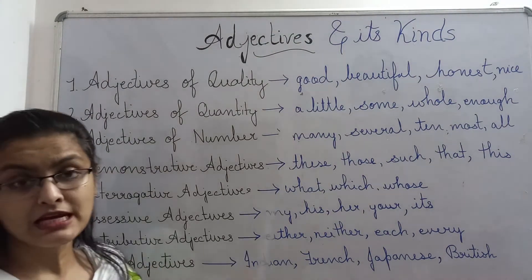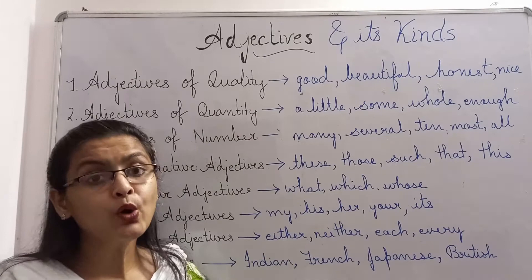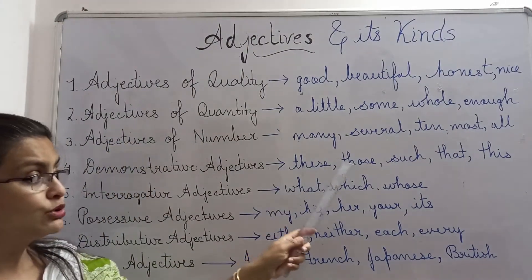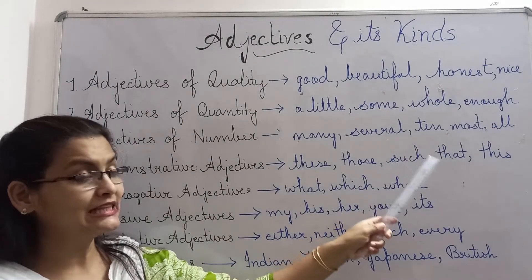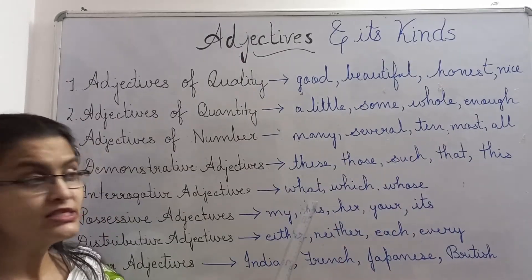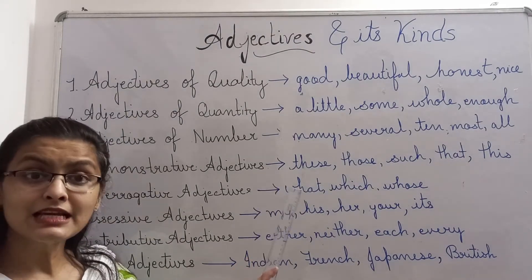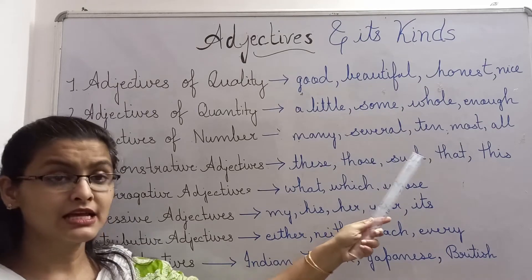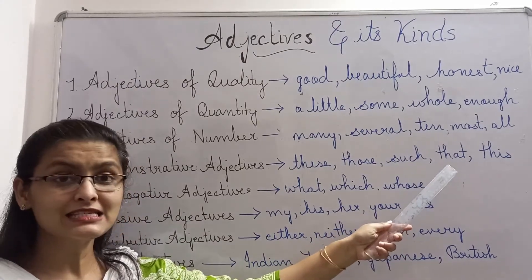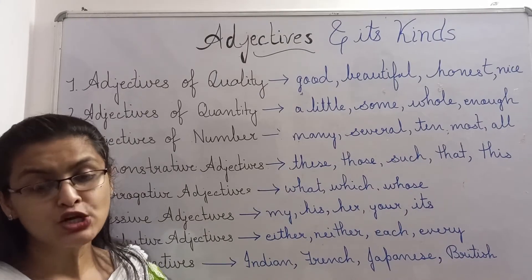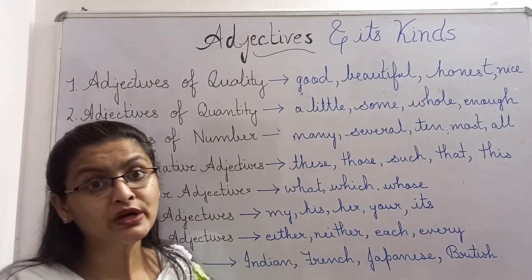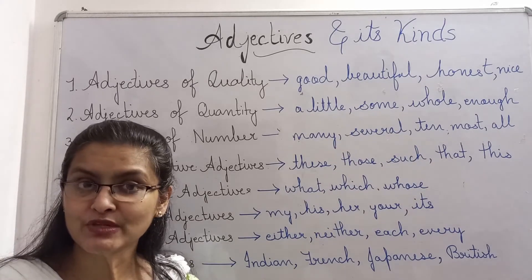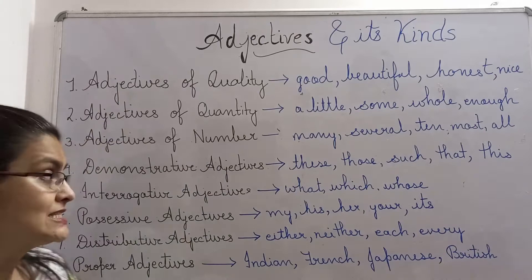Let us see the next type: demonstrative adjectives. Such adjectives point towards certain things. For example: these, those, such, that, this. These tables, those books, such persons, that table, and this bottle. These words are used for pointing out towards certain things, and that is why they are called demonstrative adjectives.